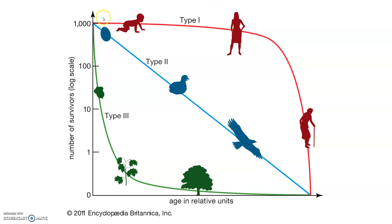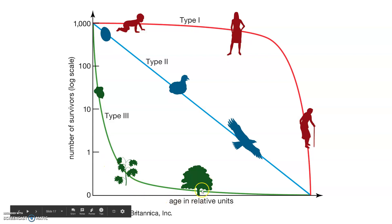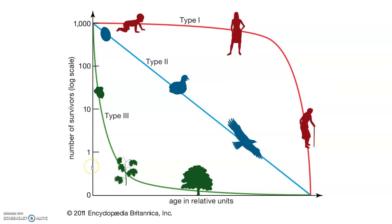With type 1, most everyone in the cohort will survive to old age. That's why it's advantageous to expend a lot of energy — you get maximum return on your investment. Whereas with R-selected species, a lot of them die really quickly due to their conditions, but at least a couple will reach old age. Type 2 is just somewhere in the middle — medium-sized animals that produce a good number of offspring, but not like a thousand acorns or something.